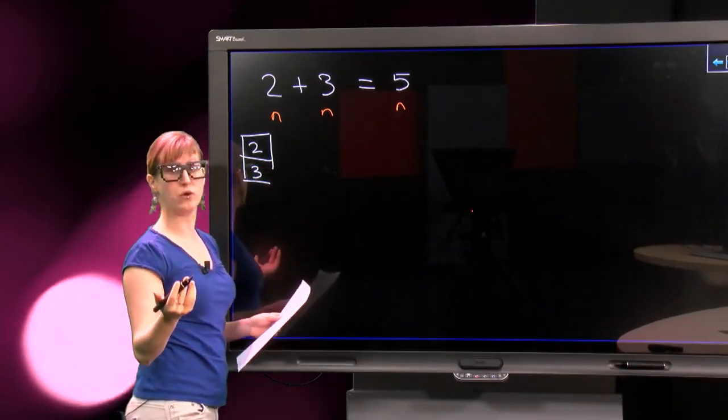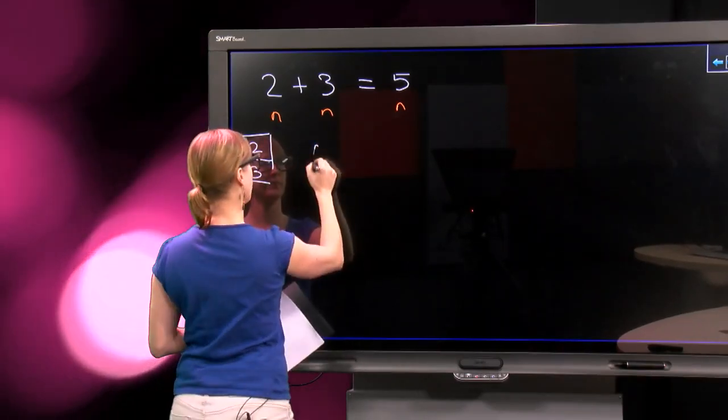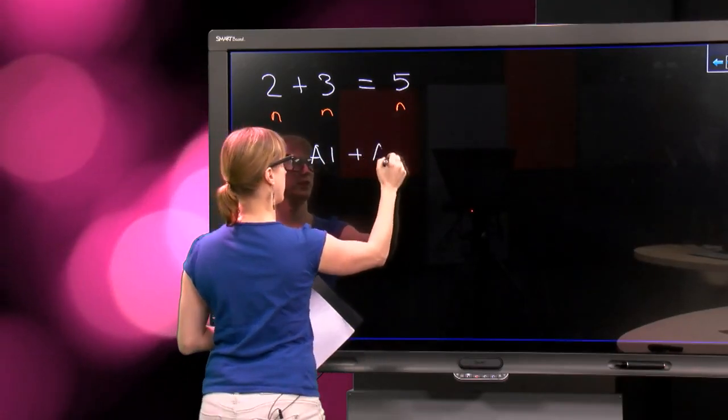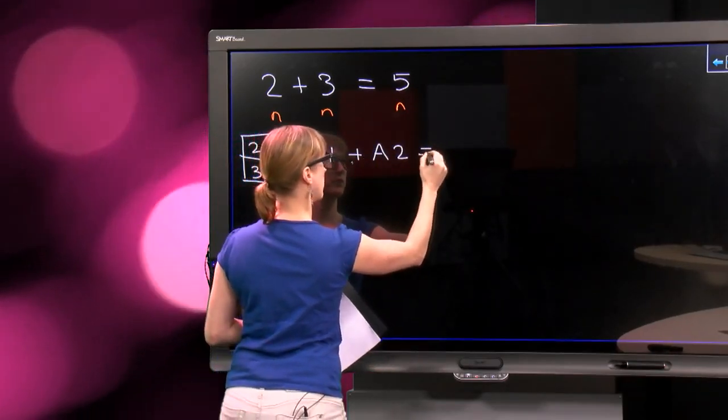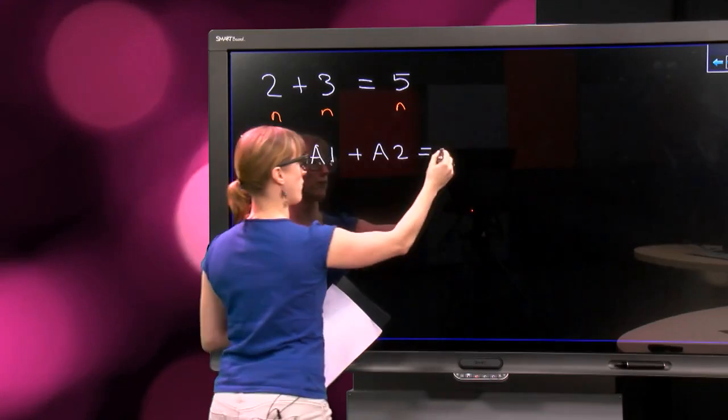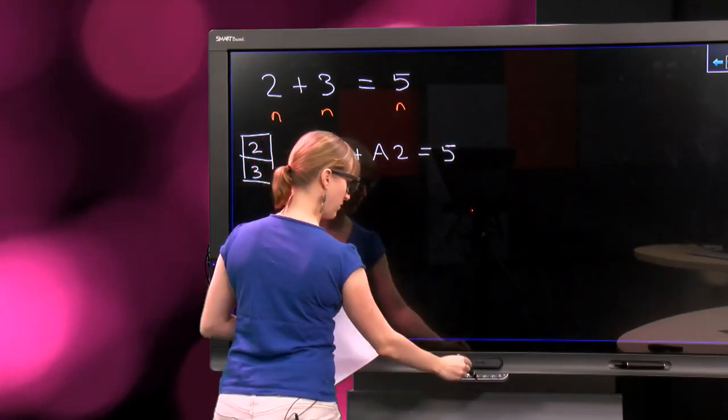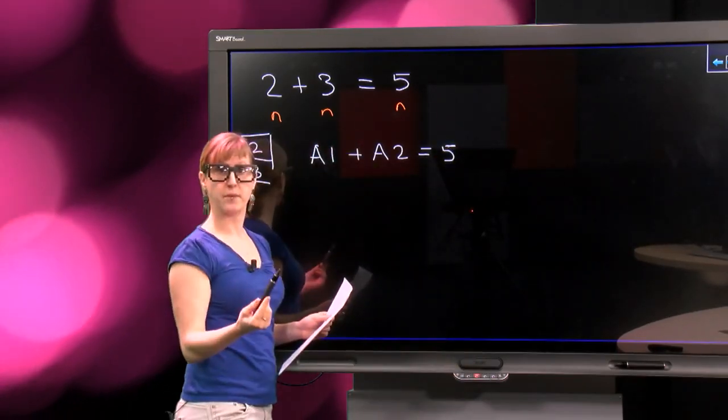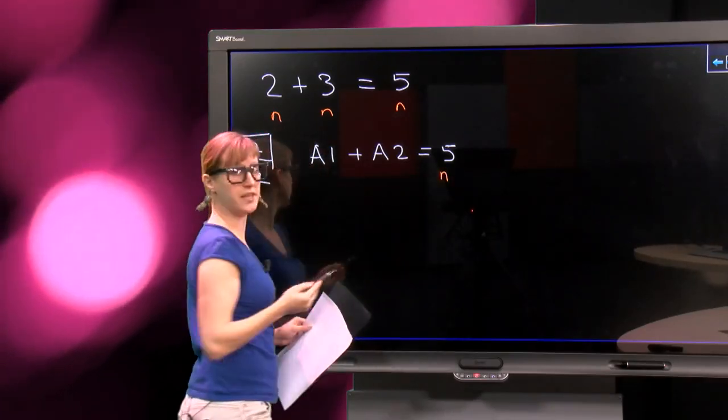So we have these two cells in a spreadsheet, and we can say A1 plus A2, in this case, is also 5. So what are the types here? Well, 5 is a number, that's easy.